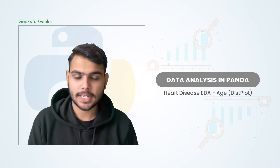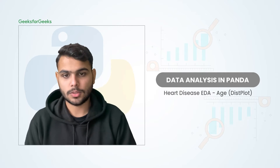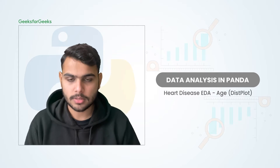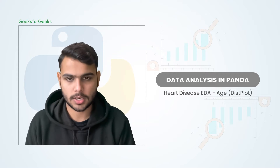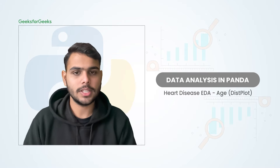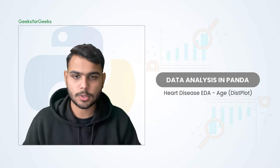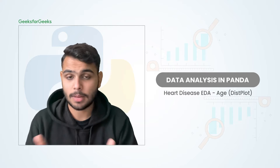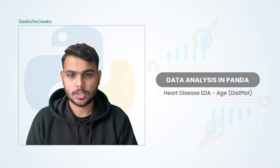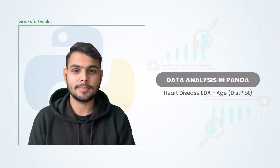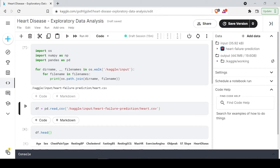Now we have the dataset, and we are going to analyze the numeric columns using a distribution plot. It will tell you the minimum value, the maximum value, and the overall distribution of a column — for example, age. Let's discuss about it.